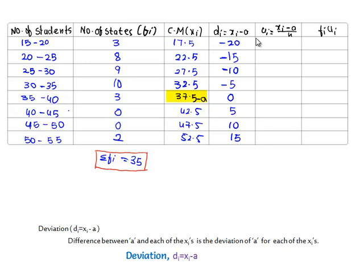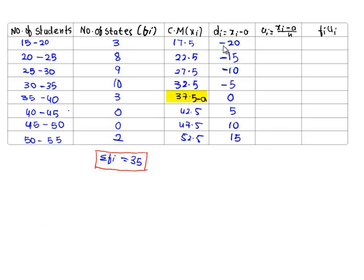As we know that the class size is 5. If we divide this deviation by 5, it will be easy for calculation. So we can reduce the value. Hence dividing this by class size, it is ui equals xi minus a by h. We get minus 20 by 5, it's minus 4. Minus 15 by 5, it's minus 3. Minus 10 by 5, it's minus 2. Minus 5 by 5, it's minus 1. 0. 5 by 5, it's 1. 10 by 5, it's 2. And 15 by 5, it's 3.